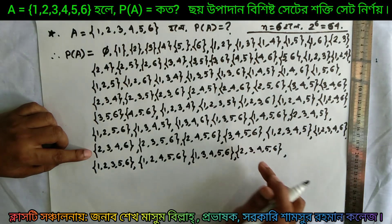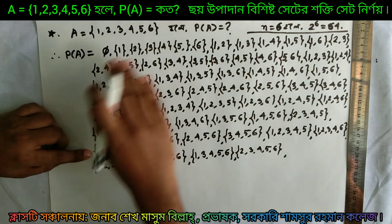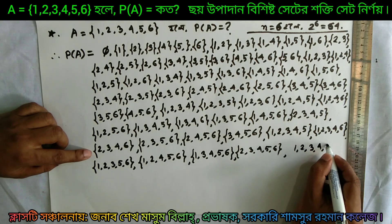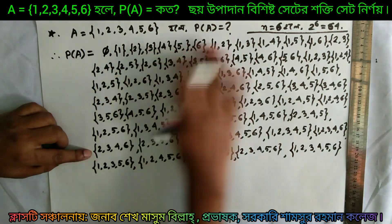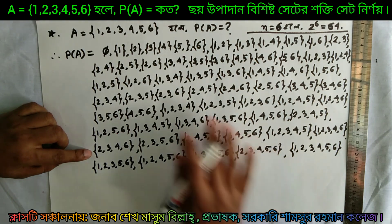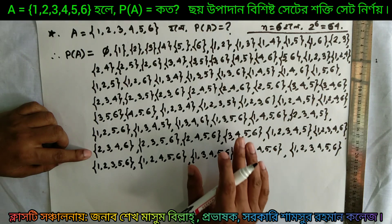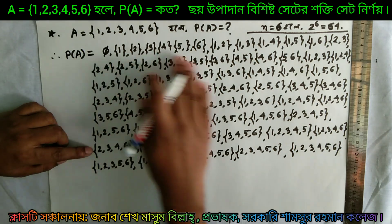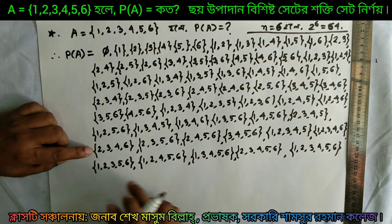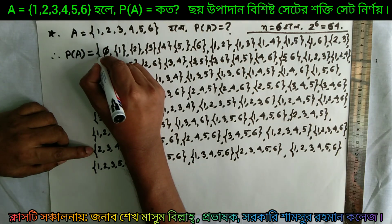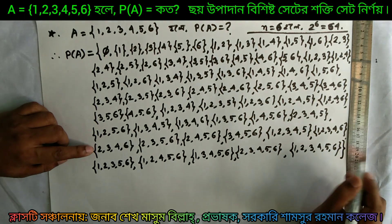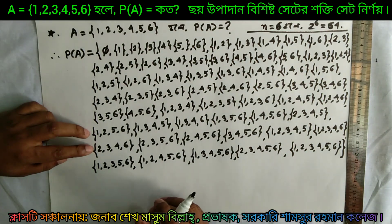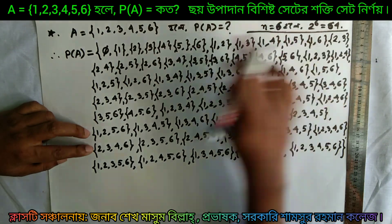Now here we have 7 subsets of size 4 and more. Yes, we have set the power set enumeration for all. {1}, {2}, {3}, {4}, {5}, {6}, and {1,2,3,4,5,6}. So when the set comes to the power of A, we can use the power of A. The power set comes from the set. We can use the second bracket for this set.